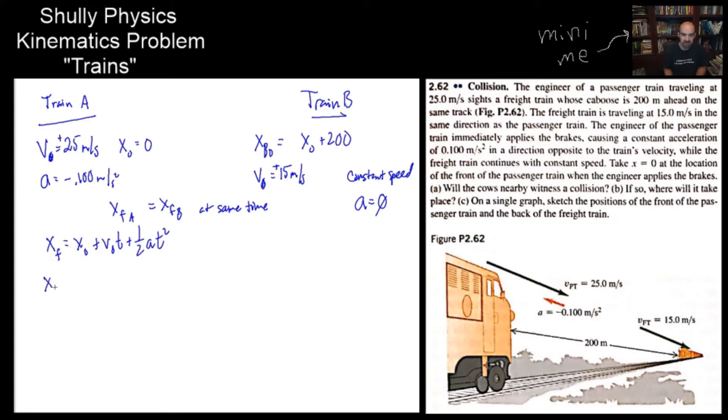So X final A equals, let's start plugging it in, equals 0 to begin with. And its initial velocity is 25 times T. We don't know a time, so let's just leave it as the unknown. Plus one half, and we've got a negative 0.1 T squared. So let's simplify this a bit. XFA equals 25T minus 0.05 T squared. So we have one equation of motion here. Let's try out the B.